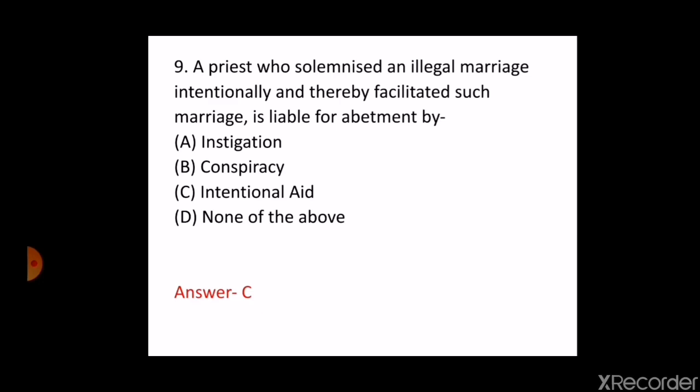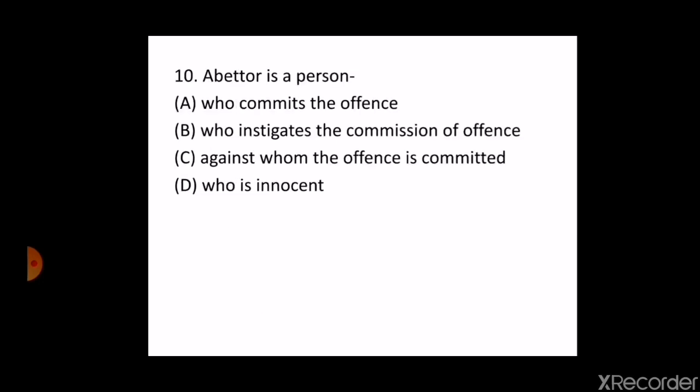The next question is: an abetter is a person — A. Who commits the offence, B. Who instigates the commission of offence, C. Against whom the offence is committed, D. Who is innocent. The correct answer is B — who instigates the commission of offence. This was asked in the Delhi JLO-ALO examination in 2016 and also in Haryana in 2013. As per section 108 of IPC, a person abets an offence who abets either the commission of an offence or the commission of an act which would be an offence if committed by a person capable by law of committing an offence with the same intention or knowledge as that of the abetter.